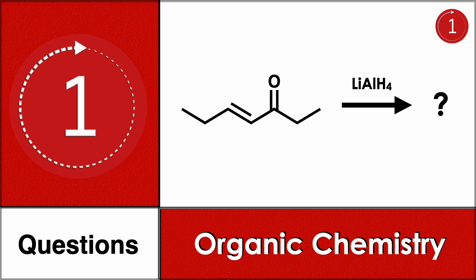Welcome to One Chemistry, this is the organic chemistry series — daily one question for you. Here you have a starting material which is a conjugated enone: one side you have an ethyl group, another side you have an alkene. You are reacting with lithium aluminium hydride. Find what will be the final product.